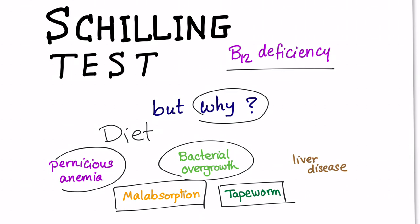Or the famous fish tapeworm, diphyllobothrium latum? Or liver disease? Which one? Schilling test kind of gives us an idea of which one is the cause, or whether the patient has B12 deficiency or not. So do you have B12 deficiency, and if so, why?